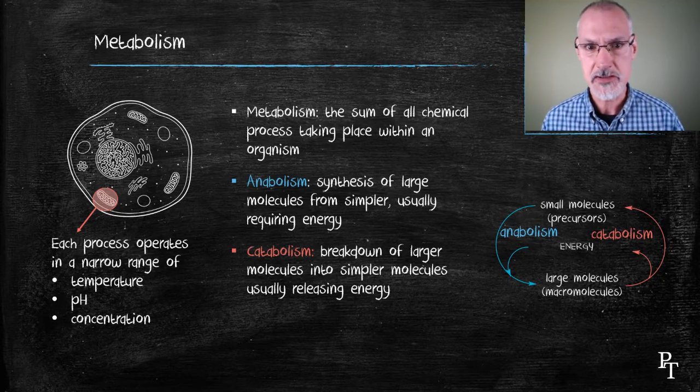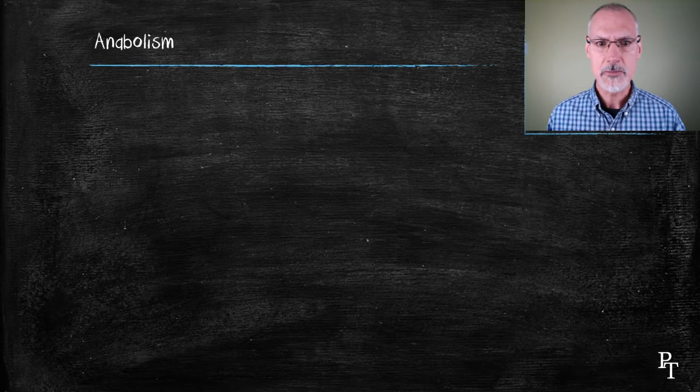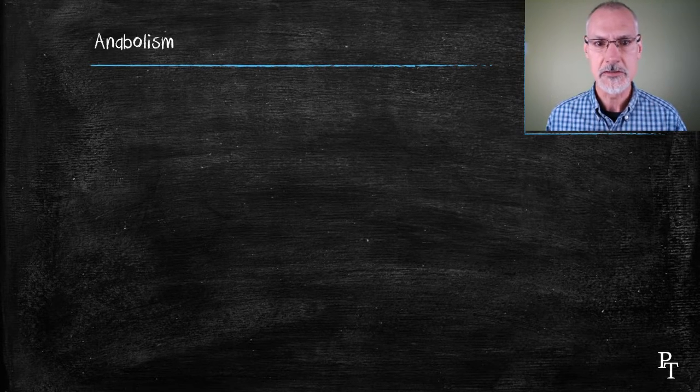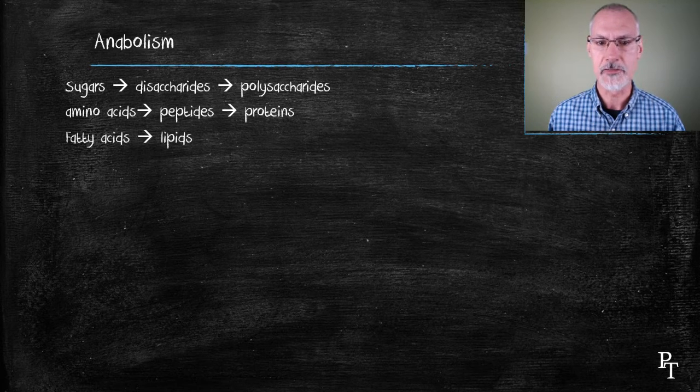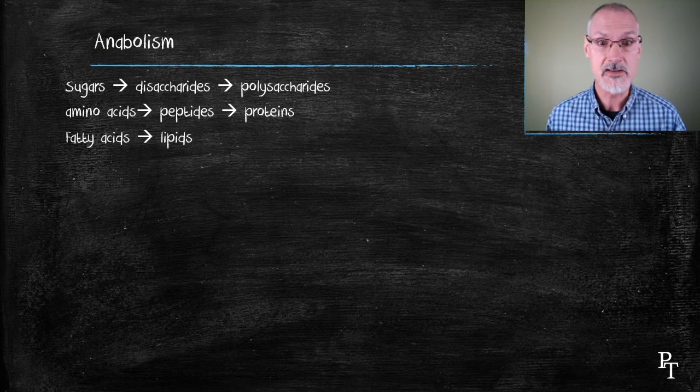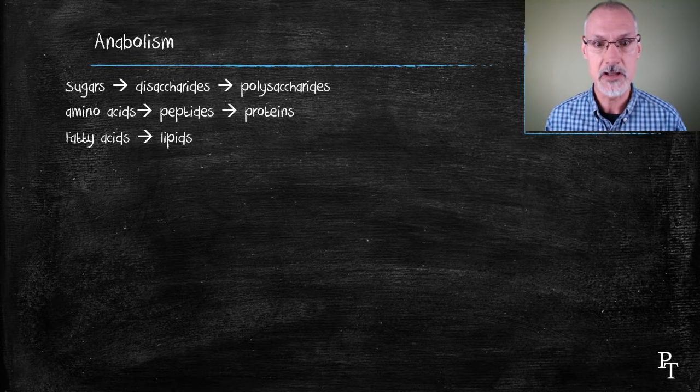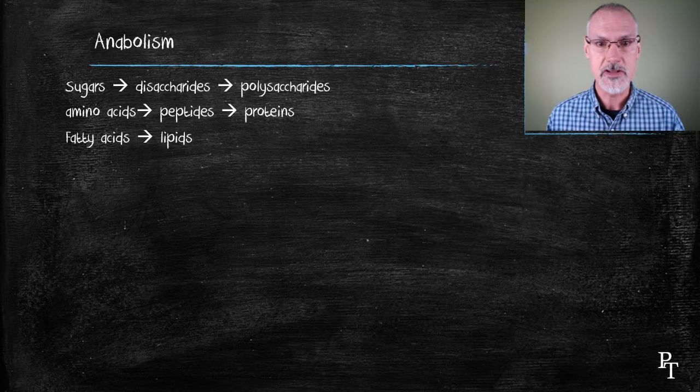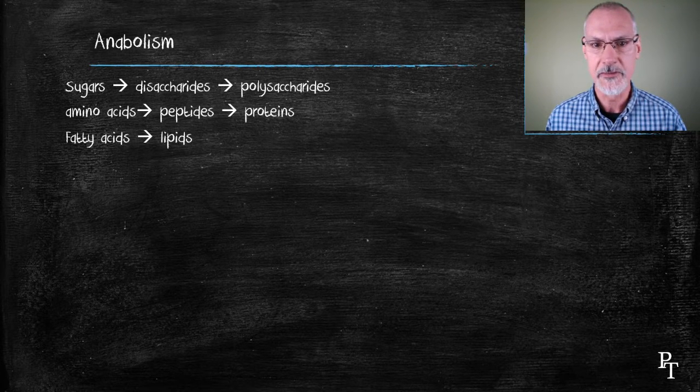Let's take a look at each term individually. First of all, an anabolic process. Anabolic processes involve building things up, so we can take smaller molecules like sugars and build them into disaccharides and eventually polysaccharides or glycogen that's in our muscles. Amino acids can be built into peptides, polypeptides, and eventually proteins. Similarly, fatty acids can be assembled to form lipids.